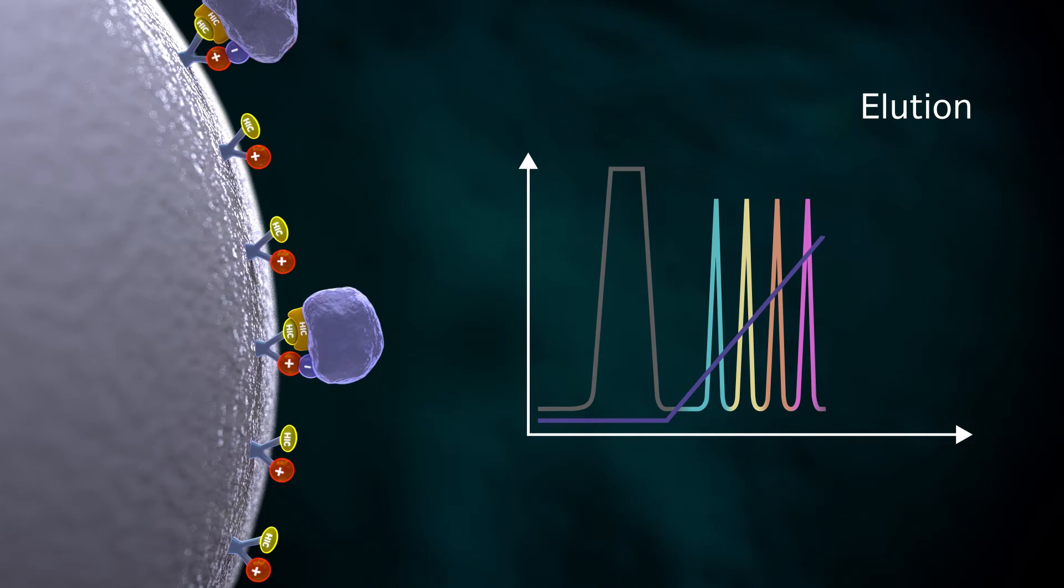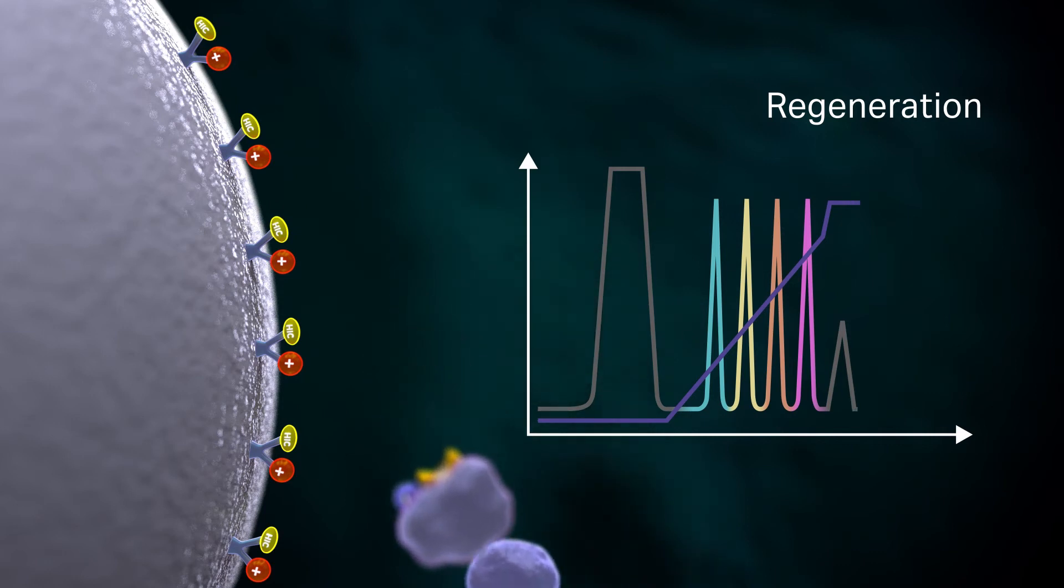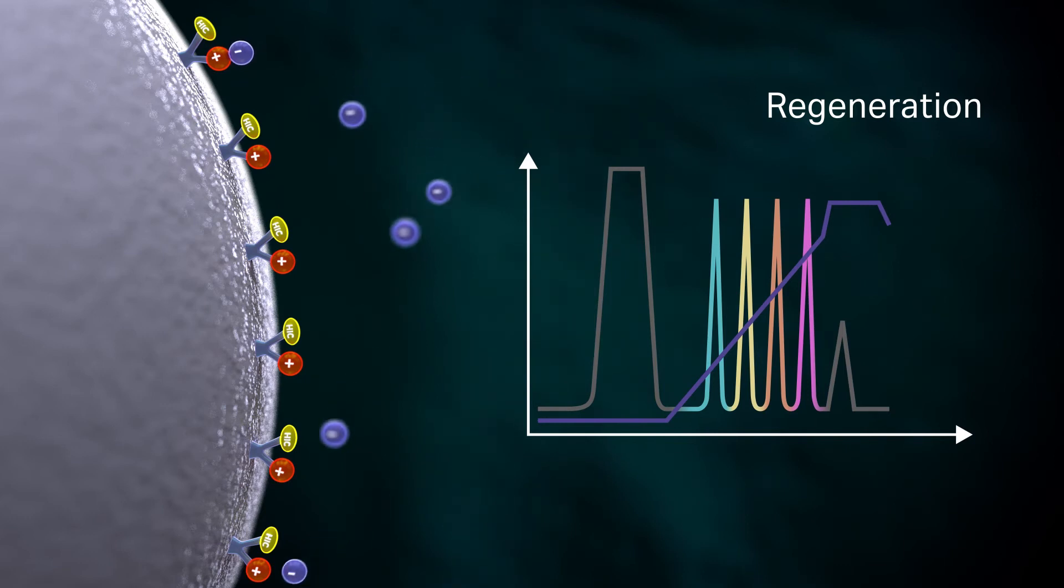Typically, a simple salt like sodium chloride is used. The final regeneration step removes all molecules still bound to the stationary phase, ensuring that the full capacity of the resin is available for the next run. Typically, one molar concentration of sodium hydroxide is used for cleaning of the resin.